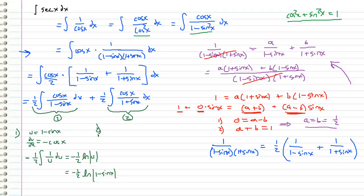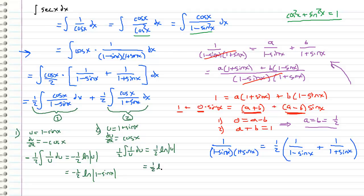Moving on to the second part, it's going to be very similar, except we are going to let u equal 1 plus sine x, and therefore du/dx is going to equal cosine x. So we don't have that negative on this one. When we make the substitution, we get 1/2 times the integral of 1 over u du, which equals 1/2 times the natural log of u, and substituting back gives 1/2 times the natural log of 1 plus sine x.